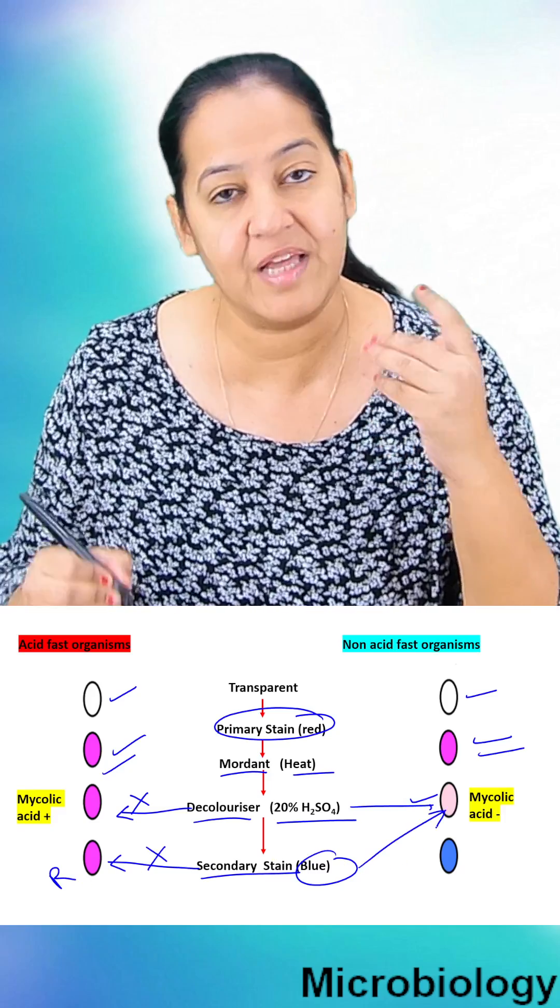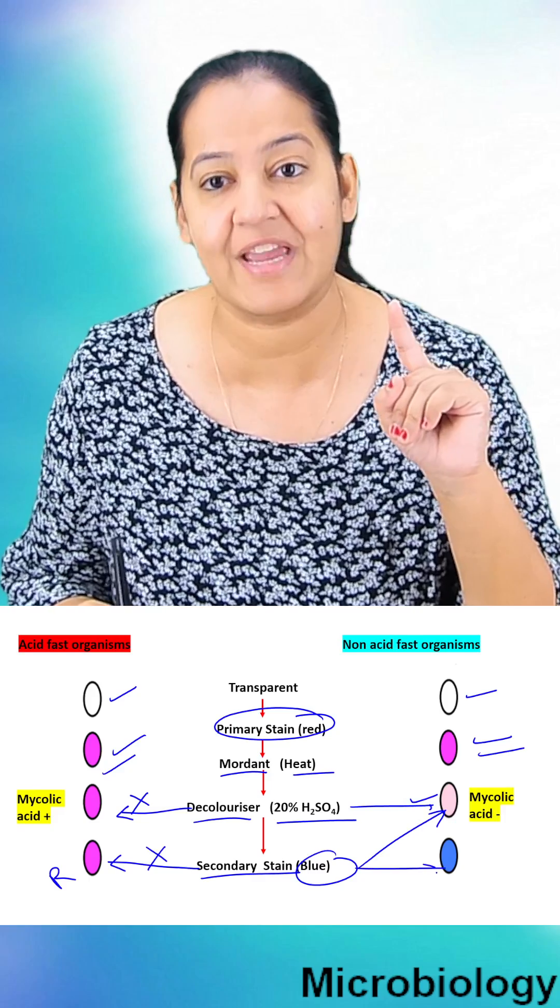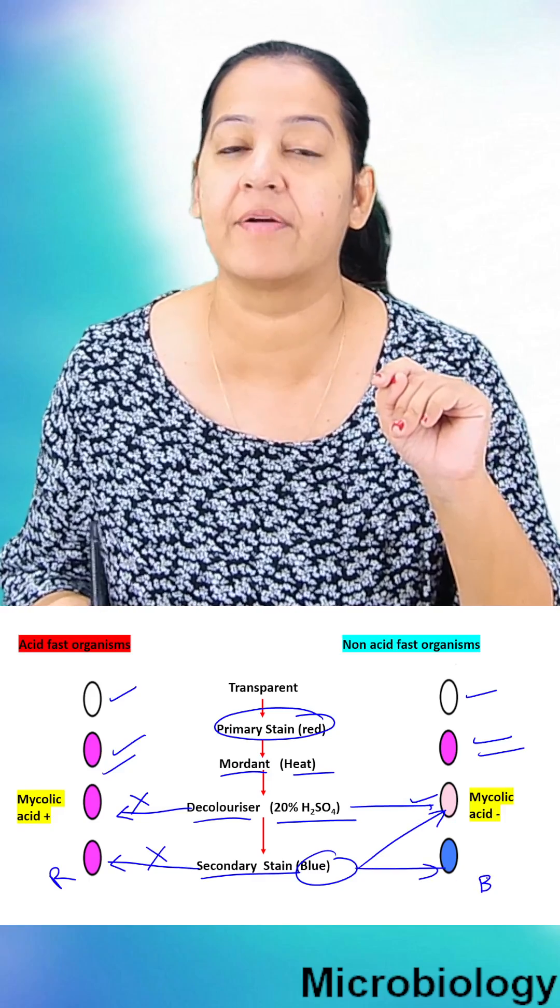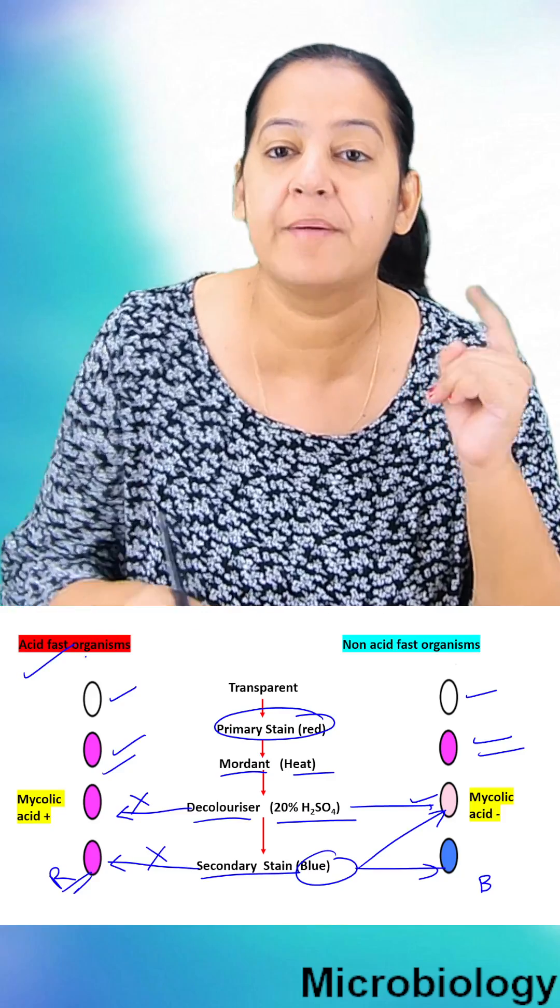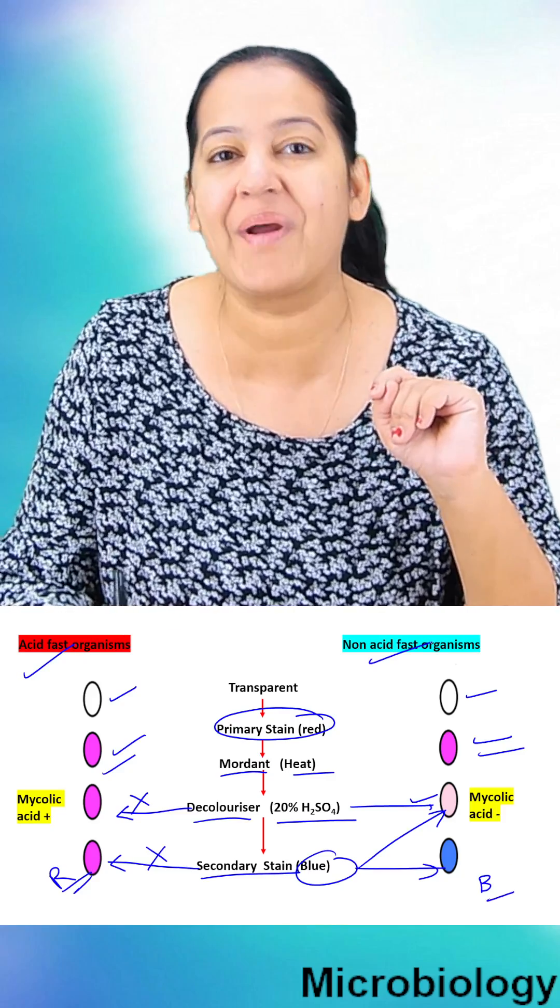But the bacteria which are sensitive, they lost the primary stain, they will take the secondary stain and in the end they are blue in color. So the red bacteria are acid-fast organisms and the blue bacteria are non-acid-fast organisms.